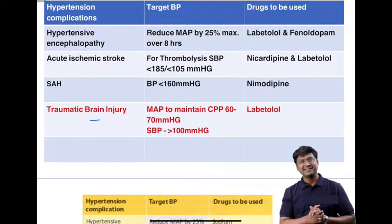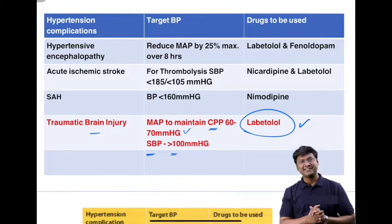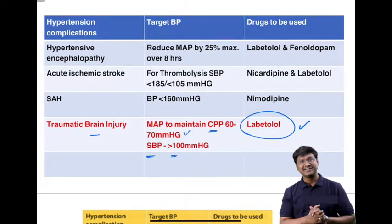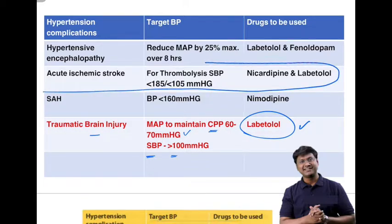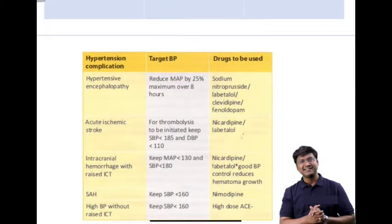In traumatic brain injury, you need to maintain a cerebral perfusion pressure of 60–70 mmHg and systolic blood pressure of more than 100 mmHg. To achieve a systolic BP above 100, you use labetalol. These are the hypertension-related conditions, their target blood pressures, and drugs. For acute ischemic stroke thrombolysis, blood pressure must be less than 185/105 mmHg — use nicardipine and labetalol.